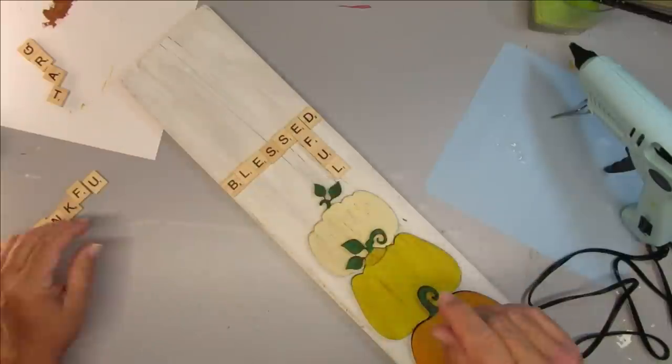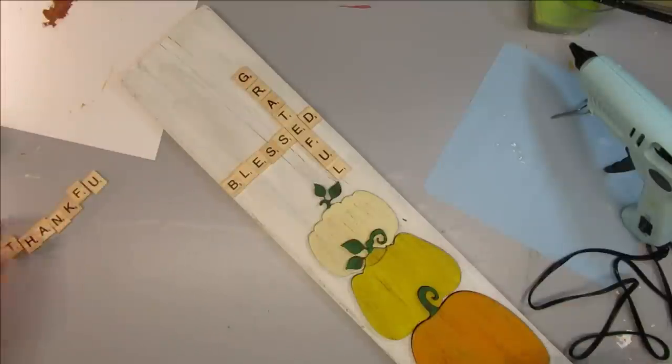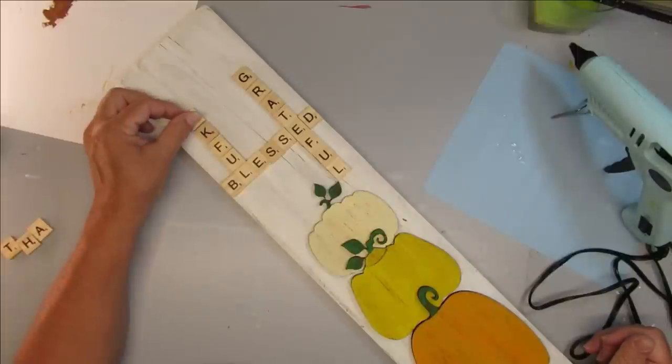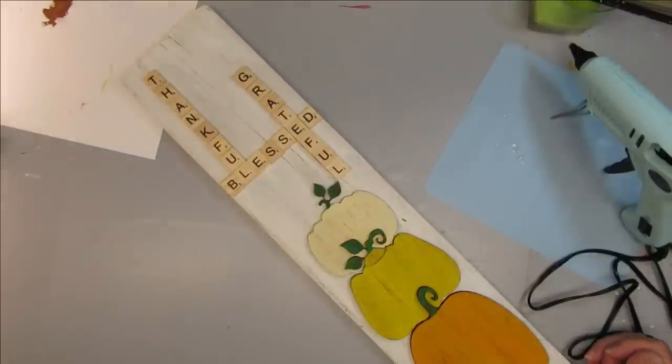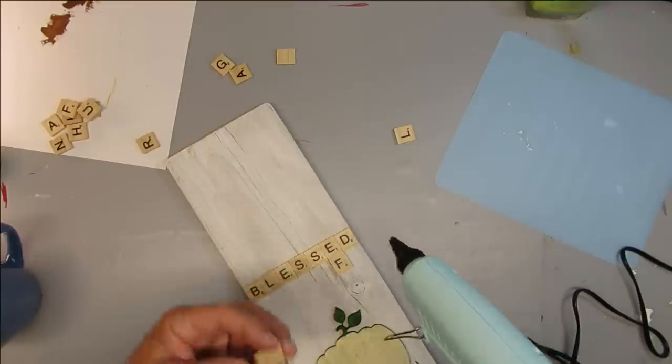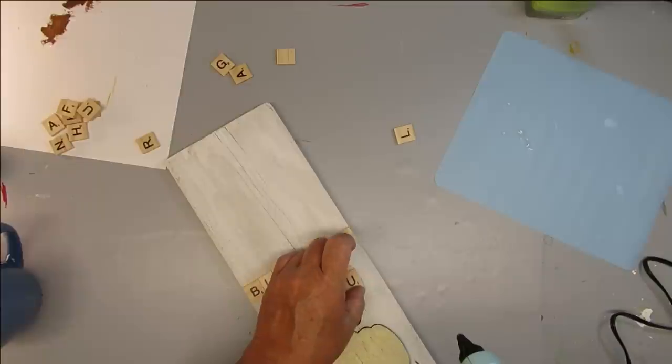Now I'm just taking the scrabble letters and I have spelled out thankful grateful and blessed and I'm going to figure them out and see if I can make them look like they would on a scrabble board. Once I had it all set up then I took them all off again and now I'm going to use the Magic Fly hot glue gun to glue them all into place.